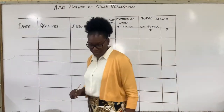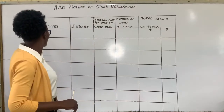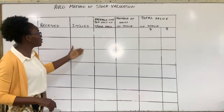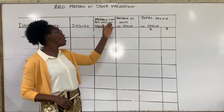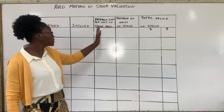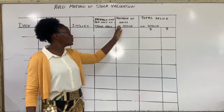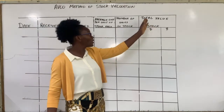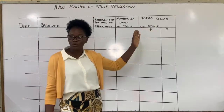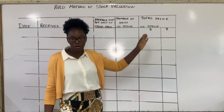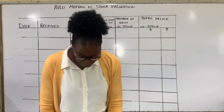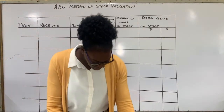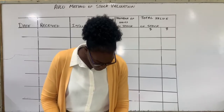Here we have a table drawn up for you already, so we are just going to fit in the elements. We have a column for our dates, stock received, stock issued, average cost per unit, units in stock, and the final column where we will record the total value of our stock. Let's begin.